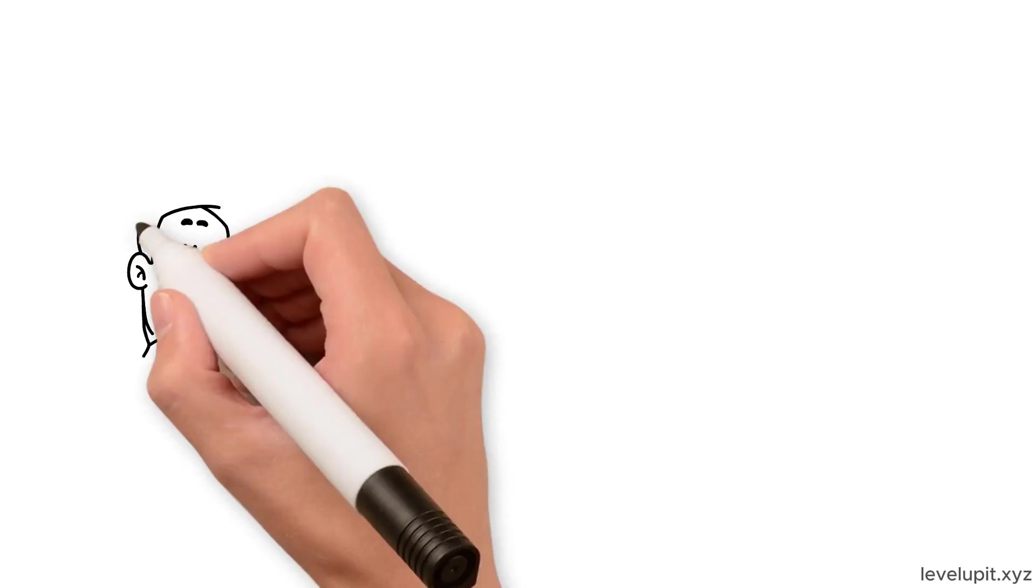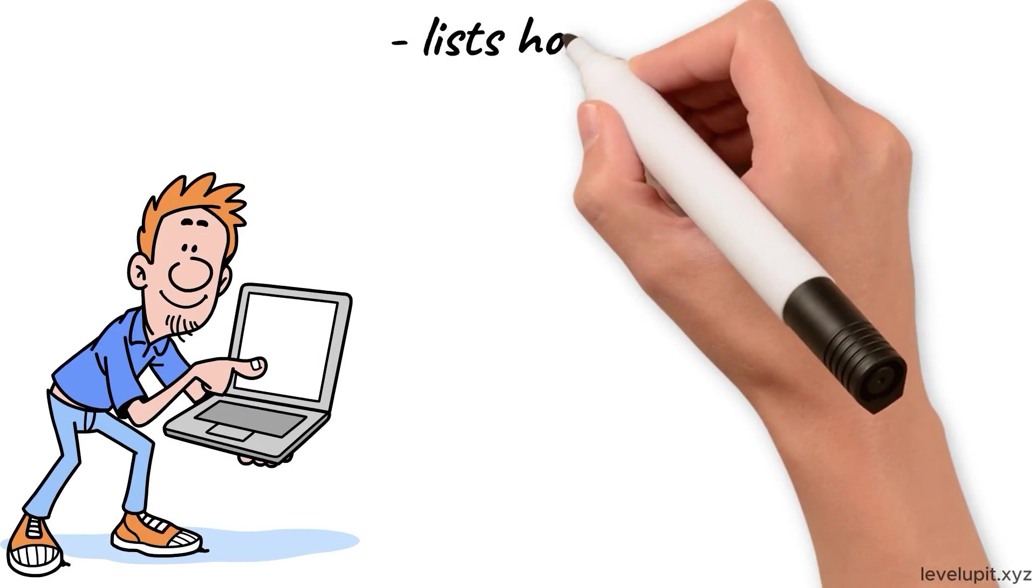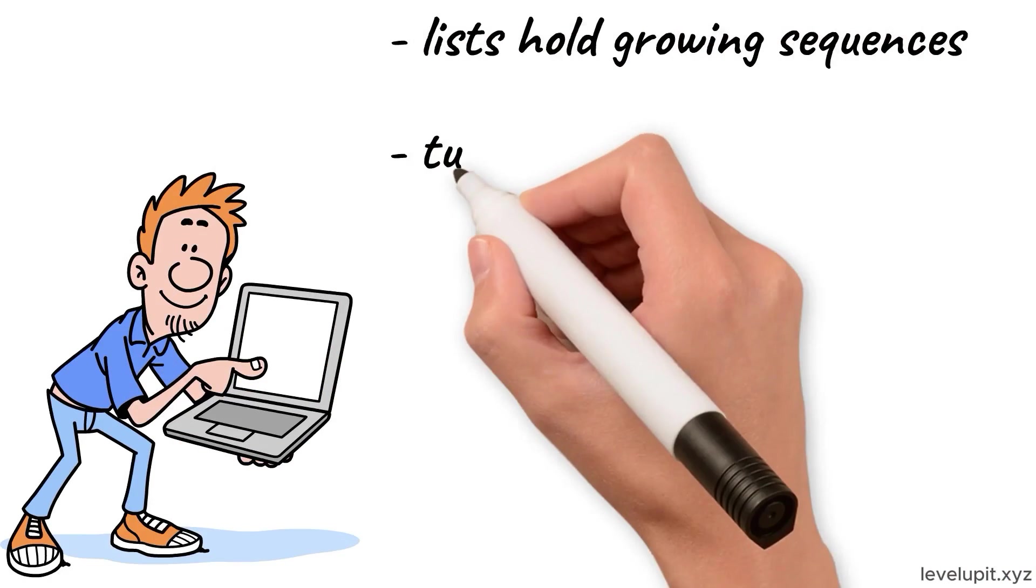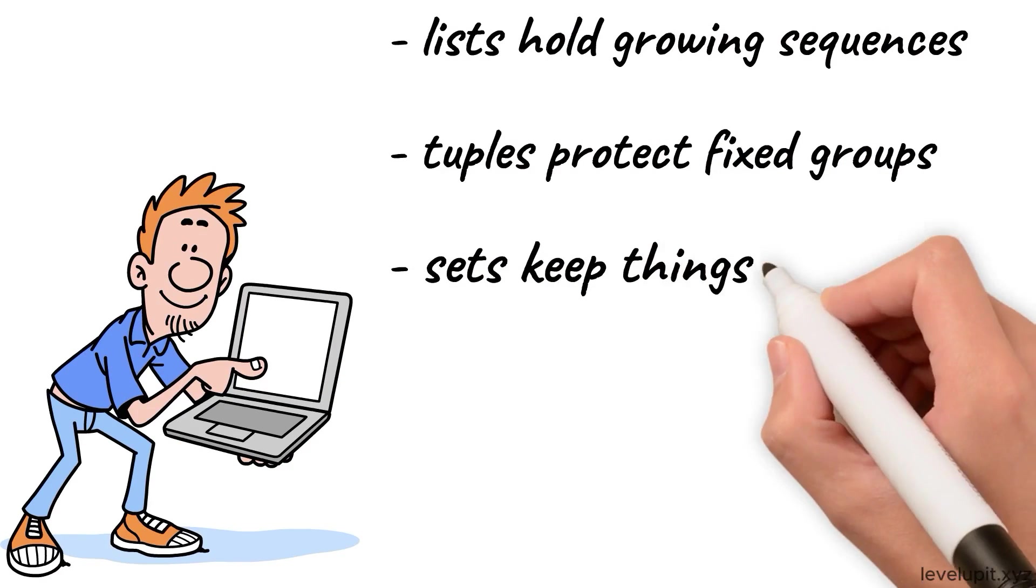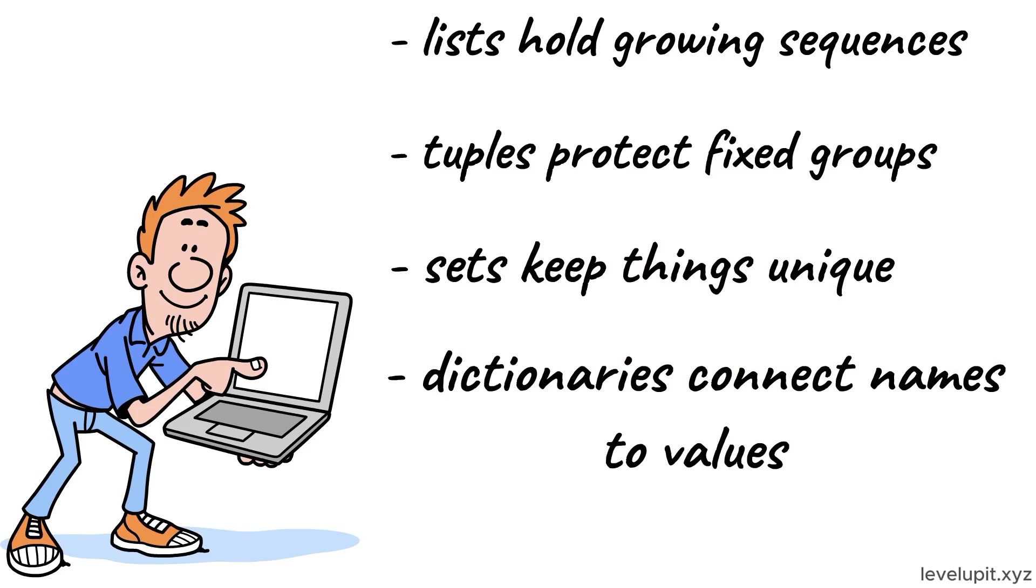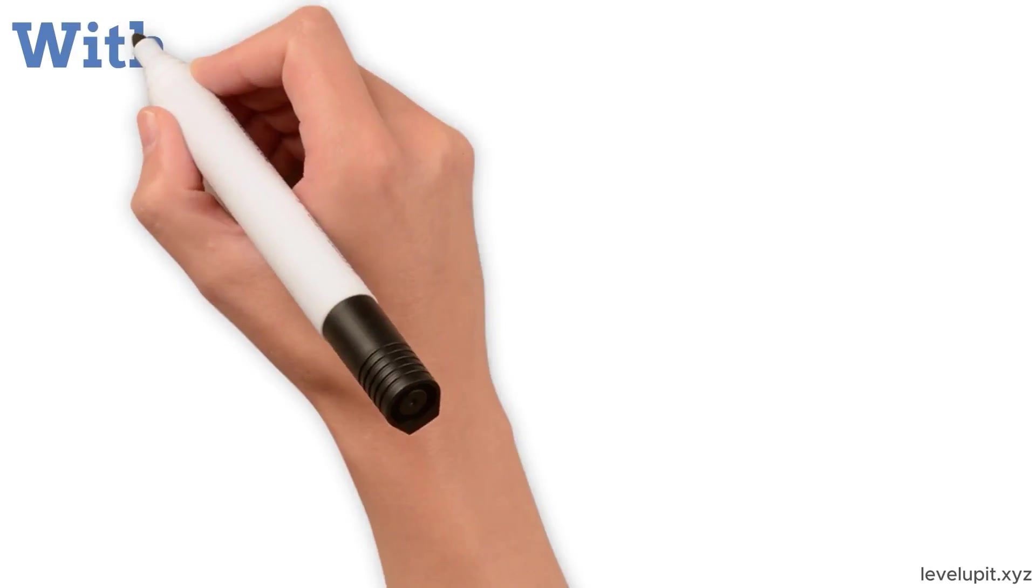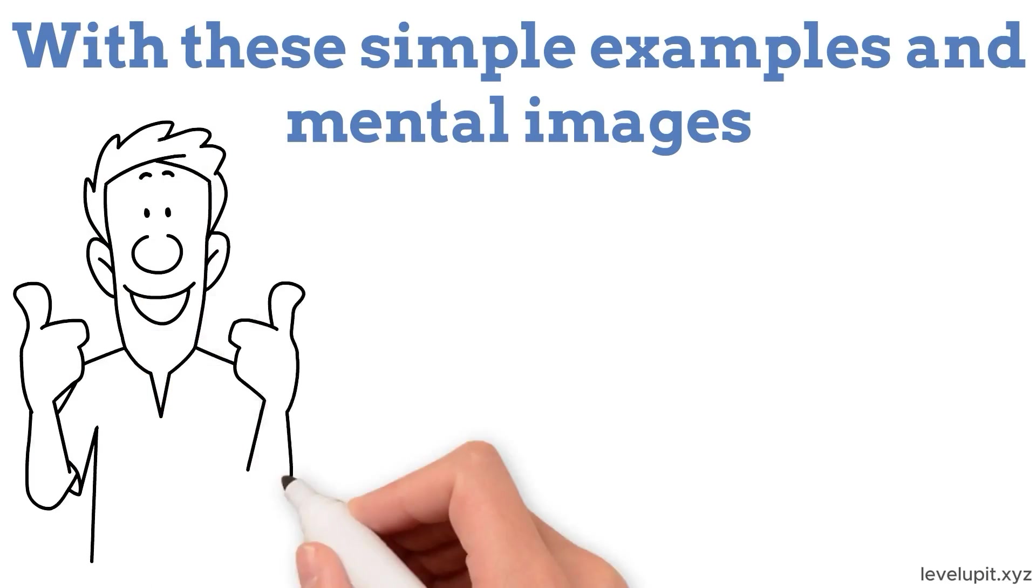Great Python code often comes down to this: choose the right container early and everything else gets easier. The right structure makes the program faster, the code shorter, and the intent clearer. When lists hold growing sequences, tuples protect fixed groups, sets keep things unique, dictionaries connect names to values, and the special tools from collections do the jobs they were designed for, work feels lighter. With these simple examples and mental images, picking the right structure becomes natural, and each script starts to feel smooth from the first line to the last.